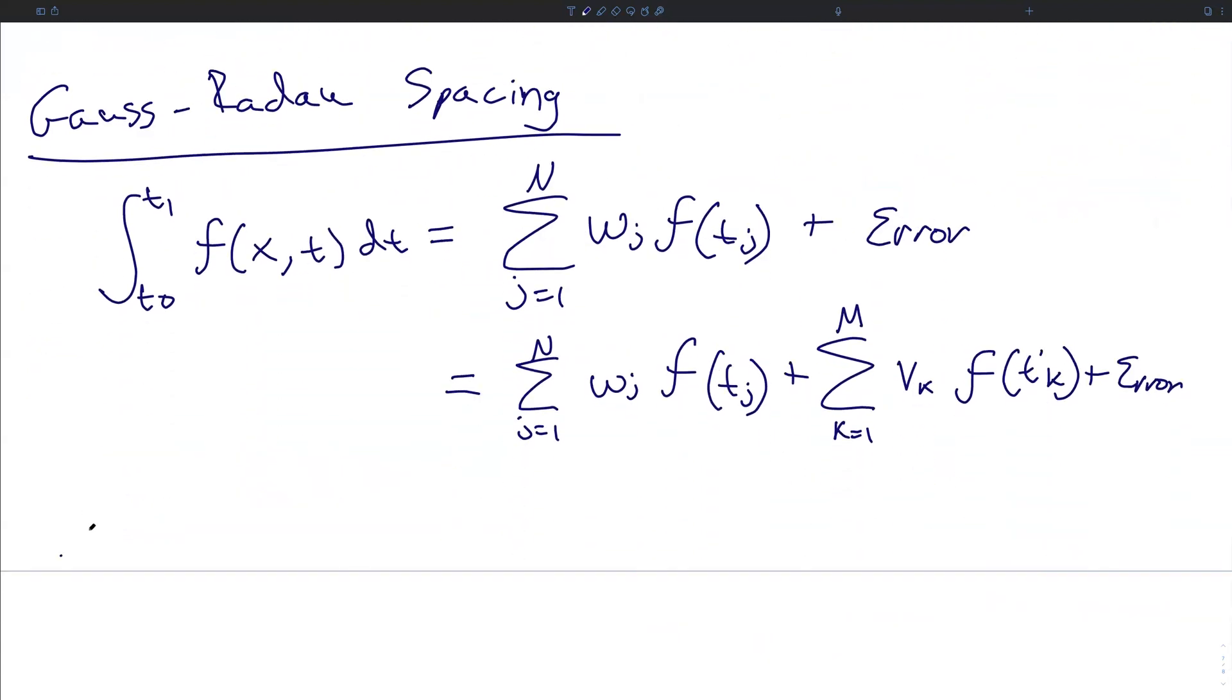In the case where m is equal to zero, this is known as Gauss's rule or Gaussian spacing. The optimal quadrature for an integrator of degree 2n minus 1 is Gaussian. If, on the other hand, we have m equal to 1, that is this summation having only one term, and t1 prime being set to t naught or t1, that is either of the endpoints of this integration, then this is known as a Gauss-Radau.